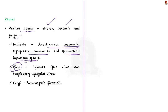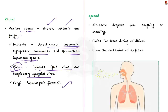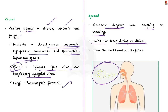The most common viruses that cause pneumonia are influenza, the flu virus, and respiratory syncytial virus. Pneumocystis jirovecii is the most common fungal cause. Pneumonia can be spread through airborne droplets from coughing or sneezing. It also spreads through fluids like blood during childbirth and from contaminated surfaces.